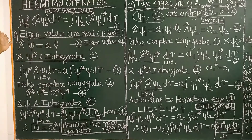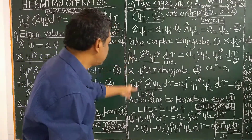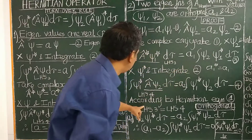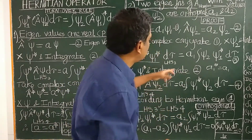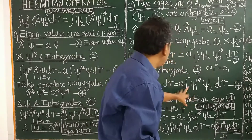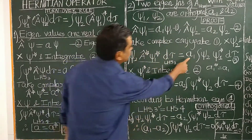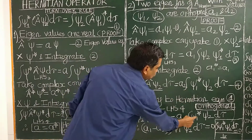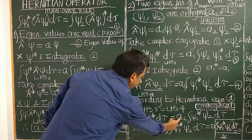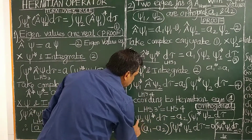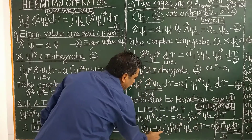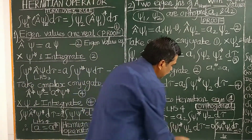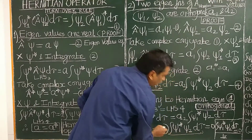According to the turnover rule and the Hermitian operator equation, the left-hand sides of equations 3 and 4 are equal. Therefore the right-hand sides are equal: a1 integral psi-1-star psi-2 d-tau equals a2 integral psi-1-star psi-2 d-tau. Rearranging: (a1 minus a2) times integral psi-1-star psi-2 d-tau equals 0. Since a1 is not equal to a2, the integral must equal 0.